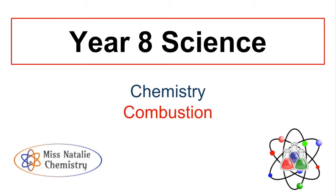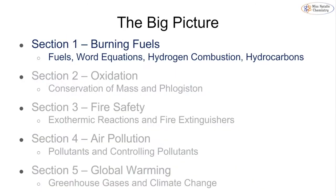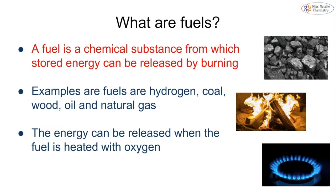In this video we're going to be looking at the year 8 topic of combustion, which is a chemistry topic covering everything in the textbook pages, which you can find on Google Classroom. The success criteria for this topic: we're going to look at how we burn hydrocarbons and hydrogen, word equations, oxidation, the fire triangle, and finishing off with pollutants and global warming. The first part is 8A/8EA: burning fuels.